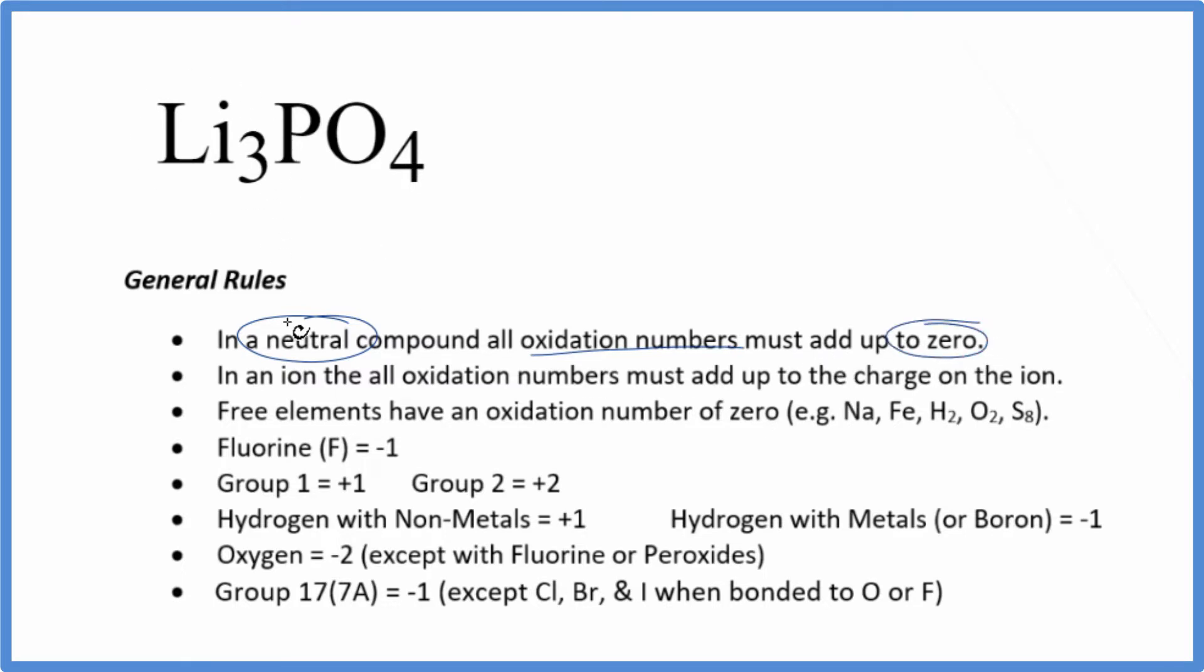We also know that lithium is in group one on the periodic table, so it has a plus one oxidation number for each lithium atom.